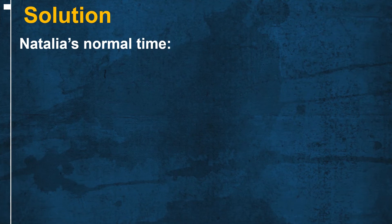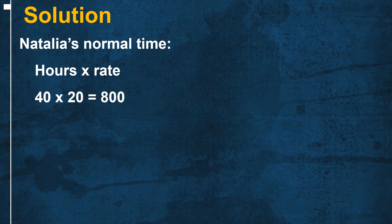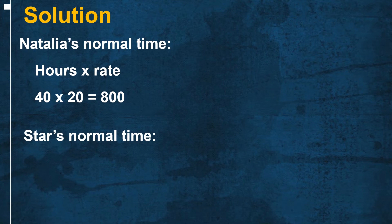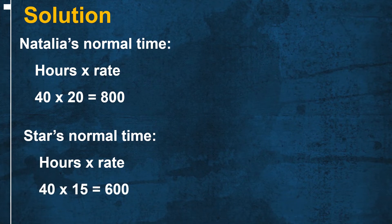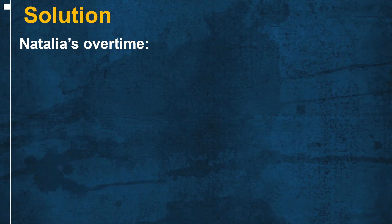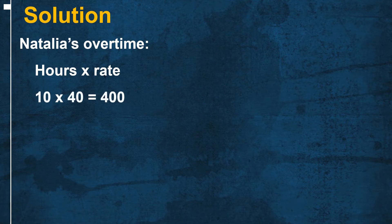The gross wage for Natalia and Star is calculated as follows. Natalia's normal time: 40 hours times N$20 equals N$800. Natalia's overtime: 10 hours (being 50 minus 40) times N$40 (double rate) equals N$400.